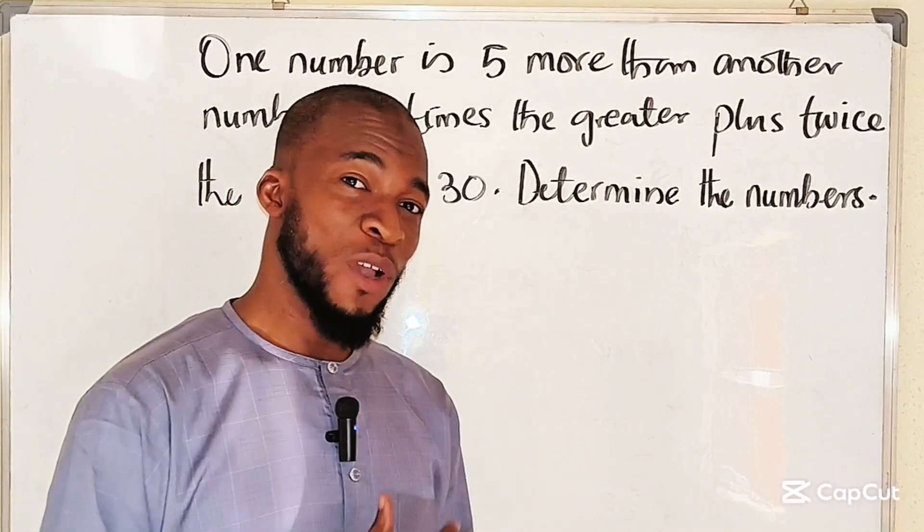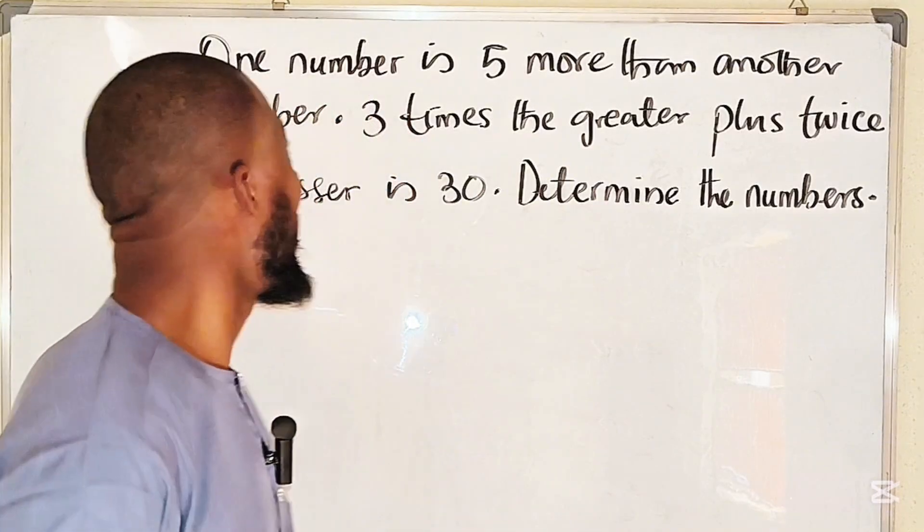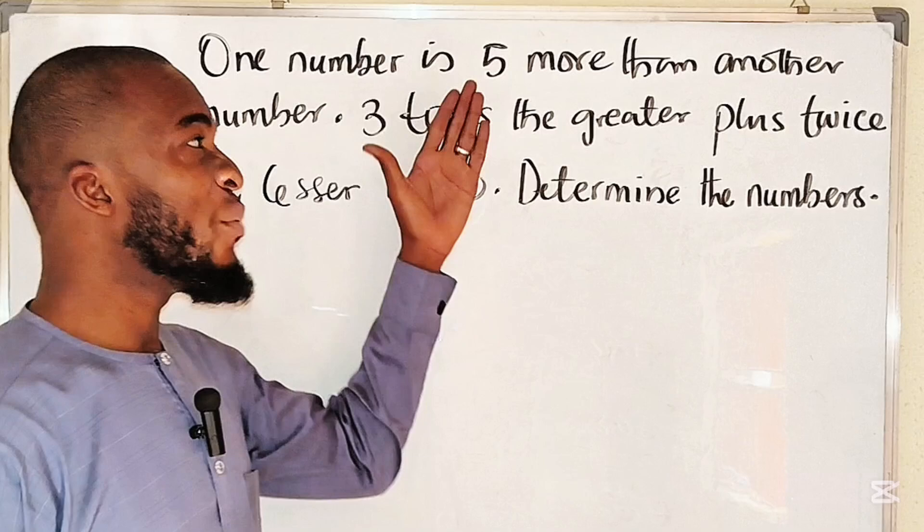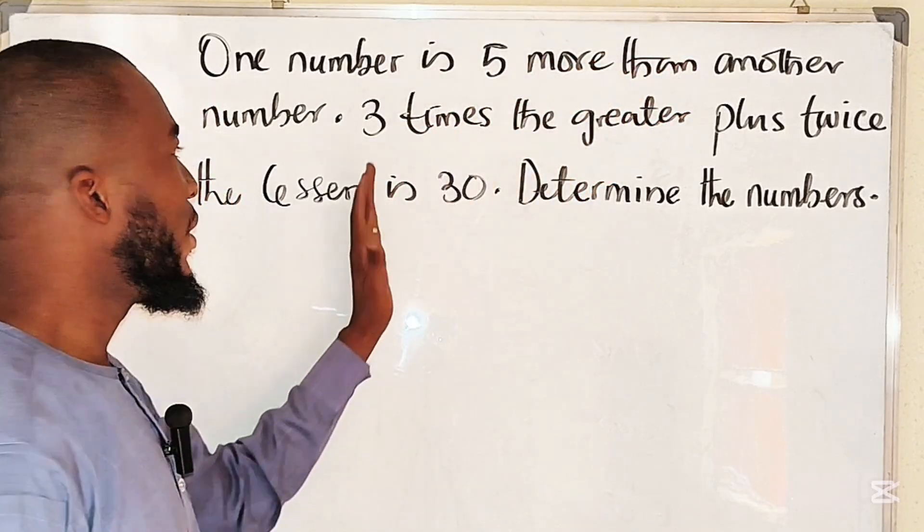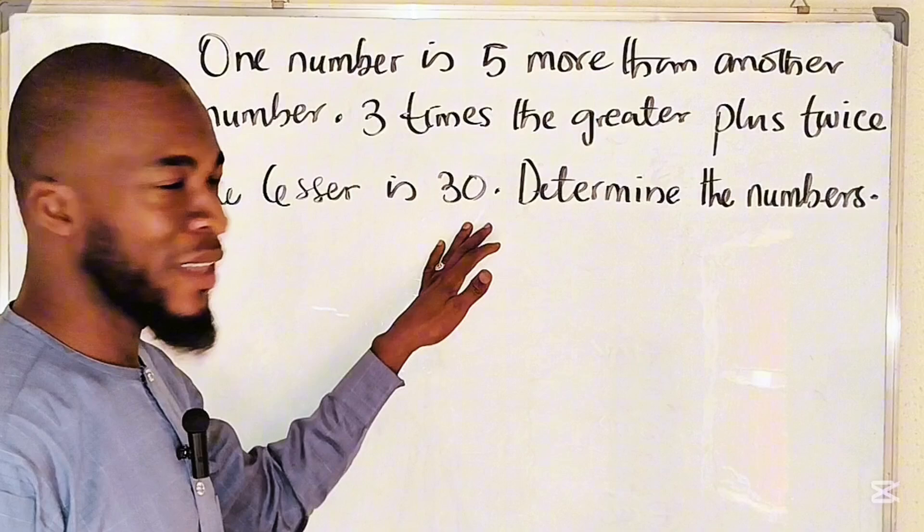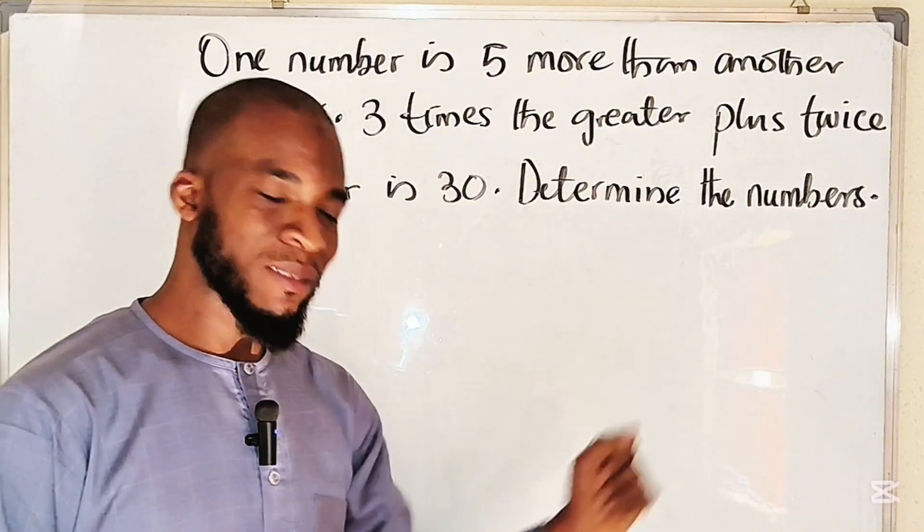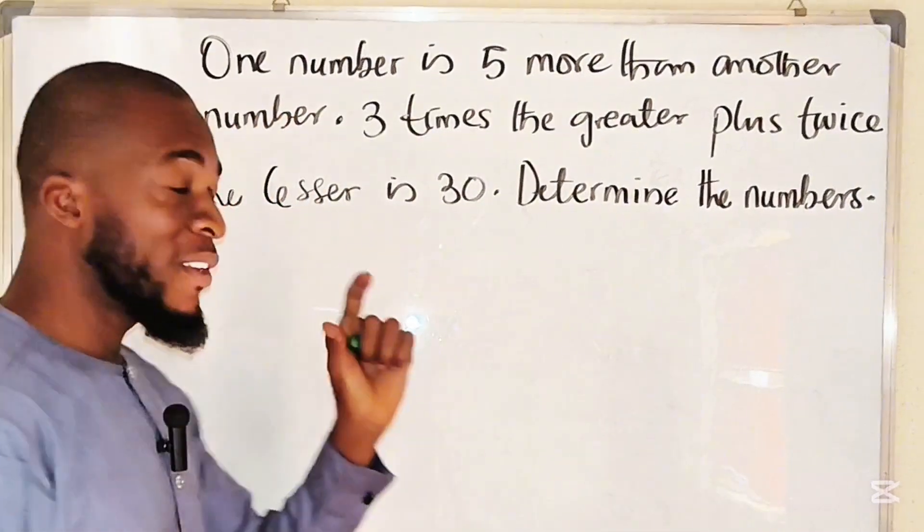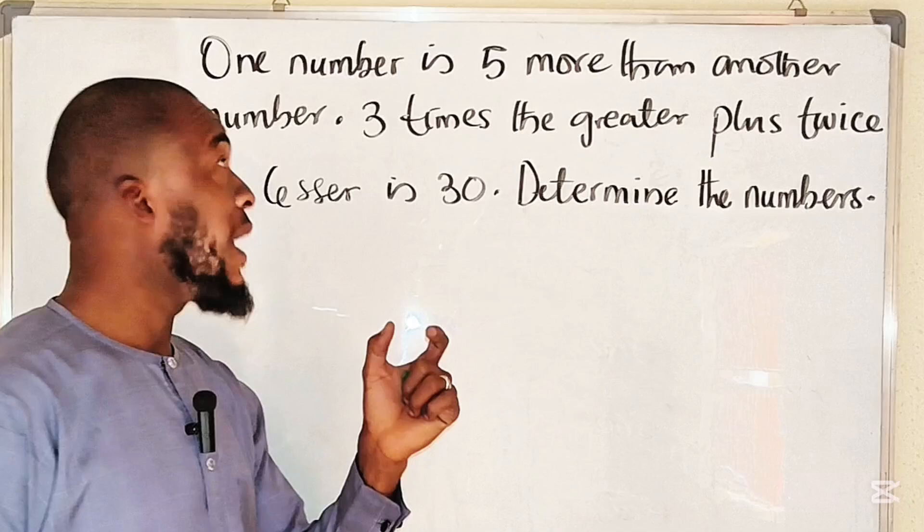Hello everyone, here is another question for grade level students. One number is five more than another number. Three times the greater plus twice the lesser is 30. Determine the numbers. All right, let the two numbers be x and x plus five.